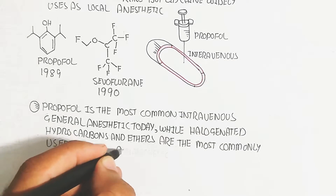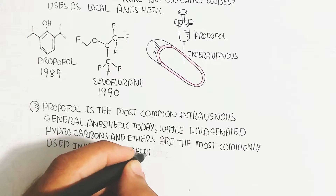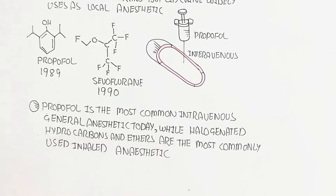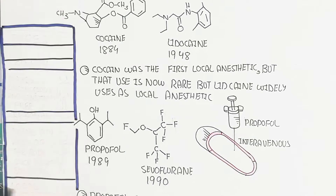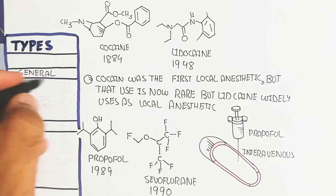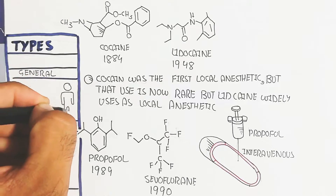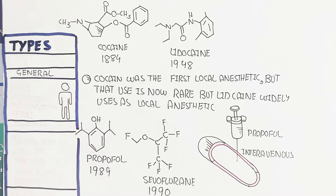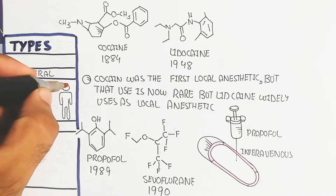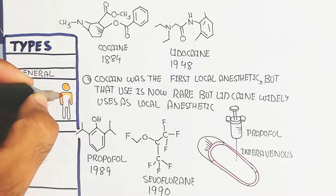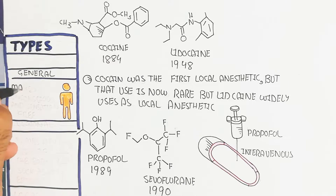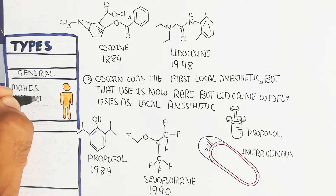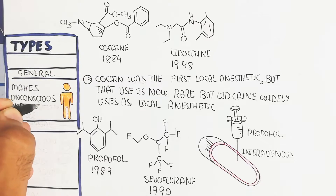Let's begin to understand the types of anesthetic based on location, region, and how they provide anesthetic properties. General anesthetic makes the patient unconscious and sensation-free throughout the body, while regional anesthetic numbs an area of the body, such as with an epidural.